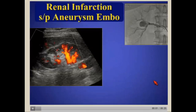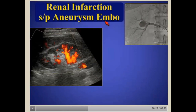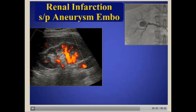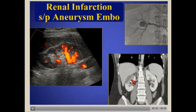Here's a patient who had a renal artery aneurysm that underwent embolization and developed pain after the procedure. On our power Doppler display, you can see very poor perfusion of the upper pole — this patient developed an infarct in the upper pole following the procedure, confirmed on CT where you can see the coils placed within the aneurysm.